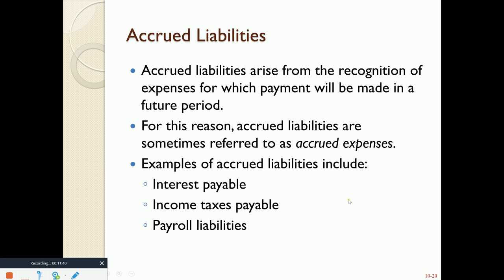Accrued liabilities arise in the adjustment process. Some examples: interest payable on loans — we just saw an example of that — income taxes payable, which we estimate as due in the following year with the tax return but incurred in the current year. And then payroll liabilities: our employees may have worked towards the end of the year, but their paycheck may not be issued until the first week of the next year. We still need to record those payroll expenses in the current year.